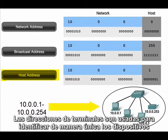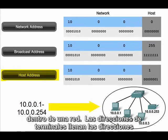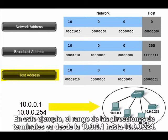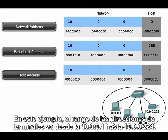Host addresses are used to uniquely identify end devices on a network. Host addresses fill the address space between the network address and the broadcast address. In this example, host addresses range from 10.0.0.1 through 10.0.0.254.